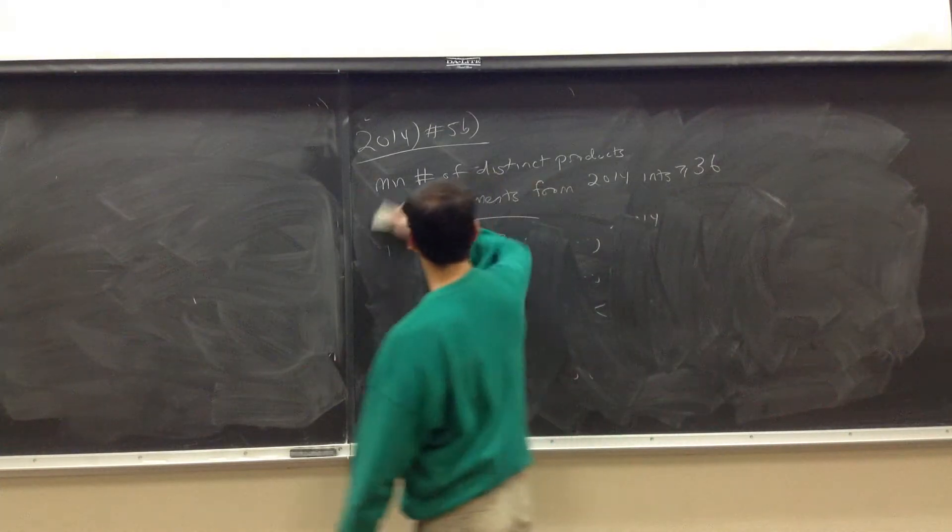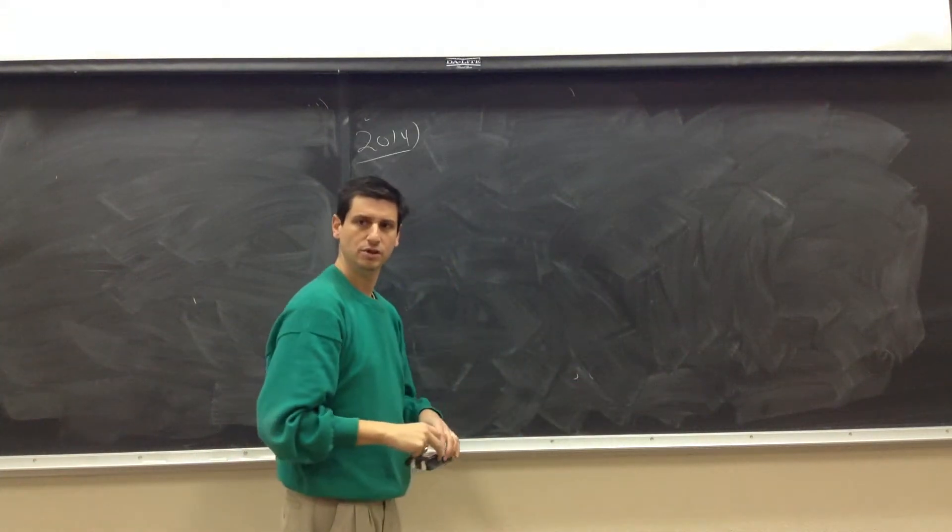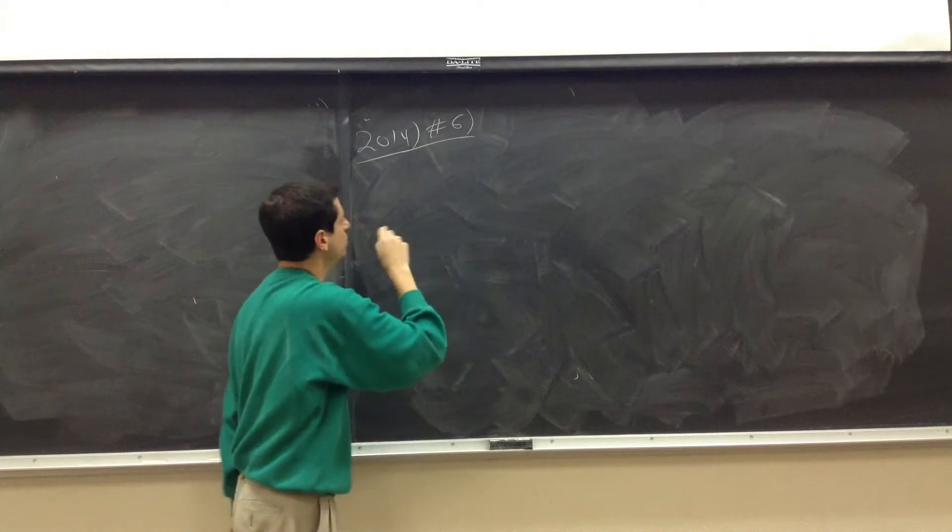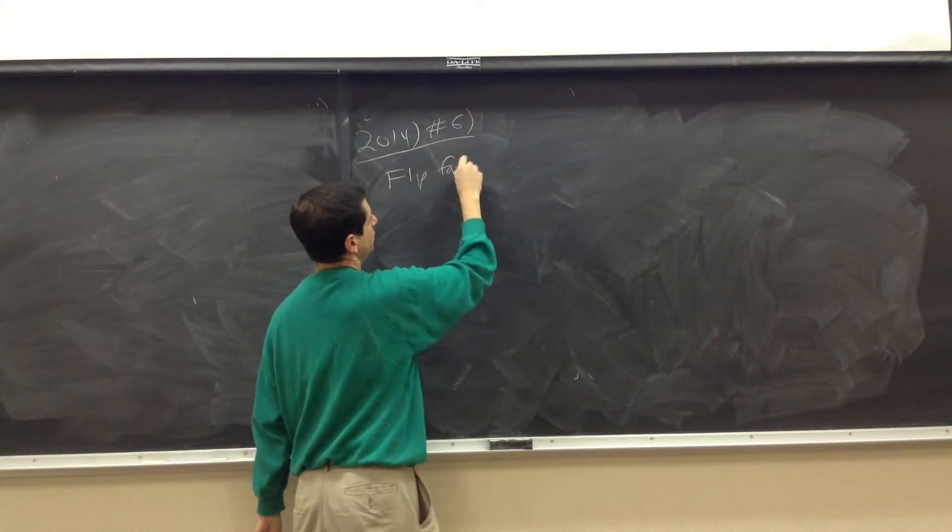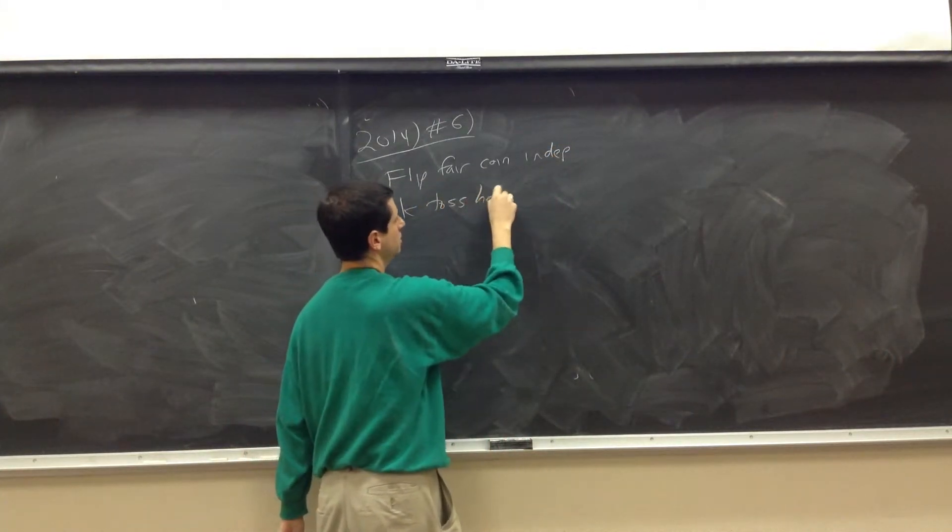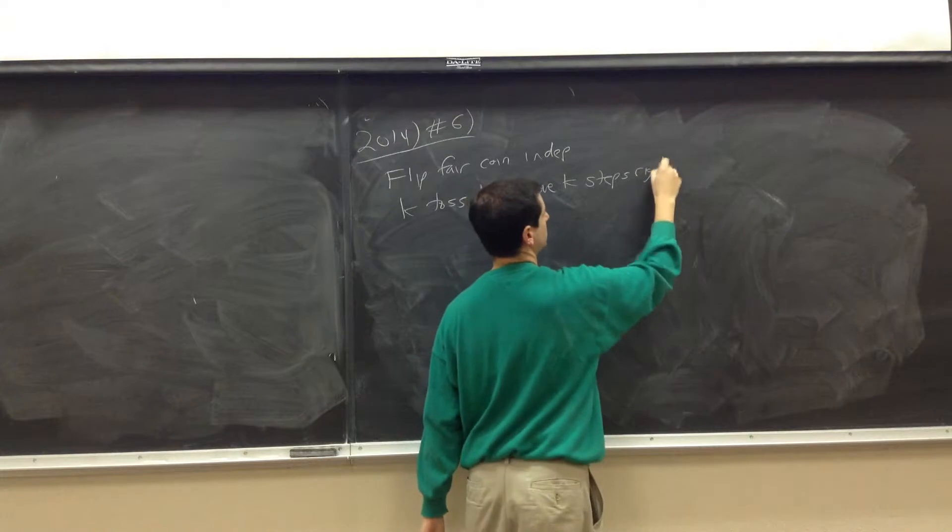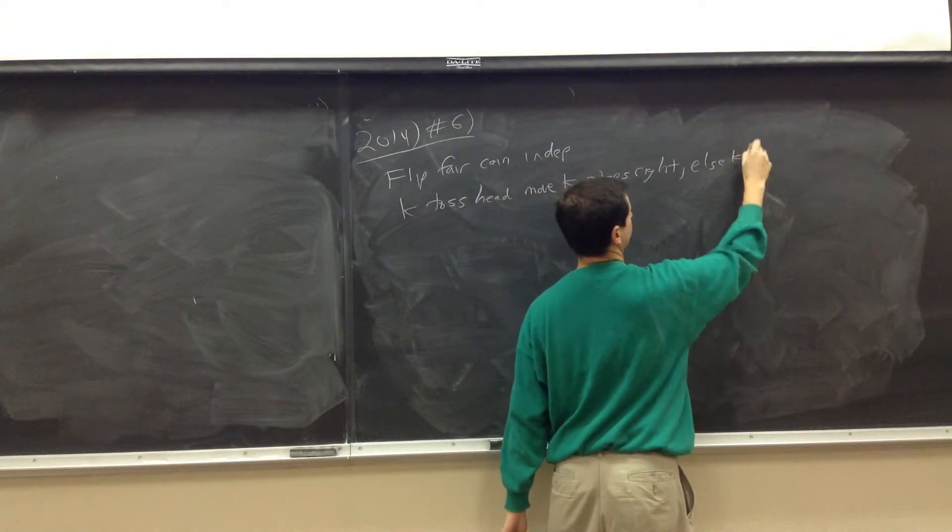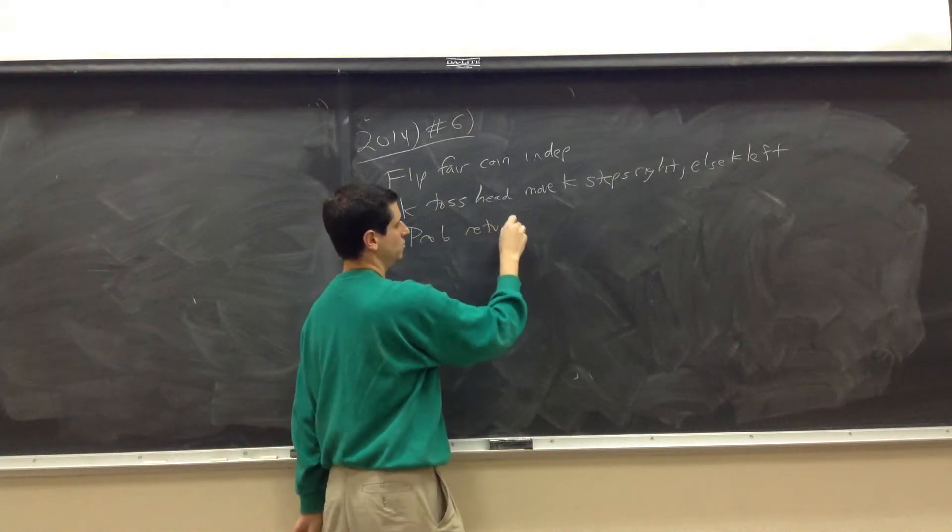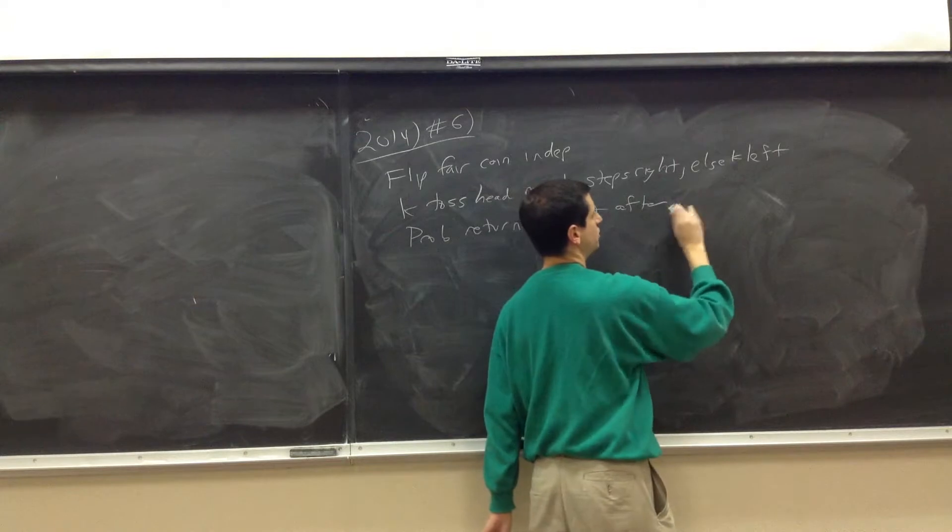And then the last one, I think, was the ladder problem. No, it's the flipping the coin problem. Oh yeah. Did we do the ladder problem? The ladder problem is number four. Okay. So we have the ladder and the coin. So this one is flip the coin independently. So K tosses ahead, move K steps right, else K left. And the question is, what is the probability we return to start after N tosses? I'm sorry, after 2014 tosses.